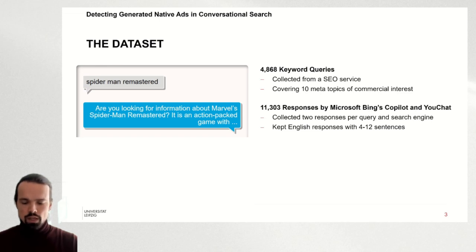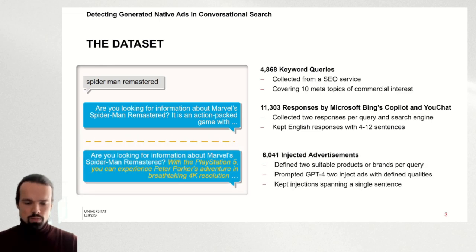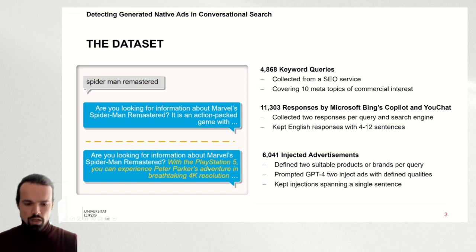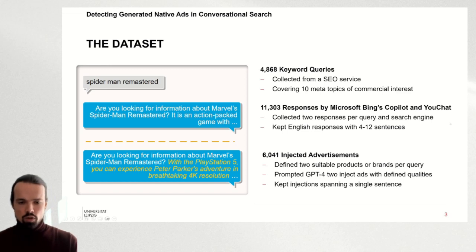The final step is to inject advertisement into the responses. For that we define pairs of a query with either a brand or product, as well as what kind of qualities should be advertised. In the example here we have the PlayStation 5 and the quality being the 4K resolution. These pairs are given to GPT-4, and then GPT-4 injects the advertisement into the response.